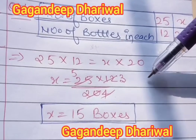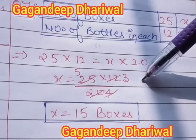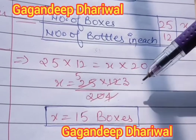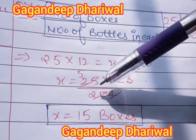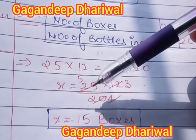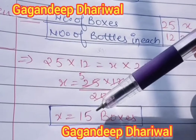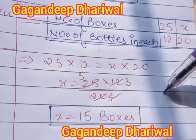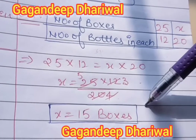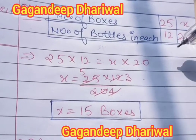We get 5 into 3: 5 is from dividing 25 by 5 and 20 by 4, and 3 is from dividing 12 by 4. So 5 times 3 equals 15. The total number of boxes is 15, meaning if there are 15 boxes then each box contains 20 bottles.